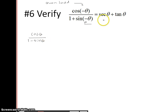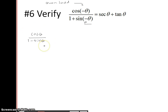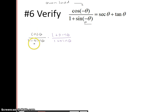I want this to equal secant of theta plus tangent of theta. So what we're going to need to do is use a new trick, which is called multiplying by the conjugate. We multiply by the conjugate when there's nothing left to do. The conjugate is the denominator but with the opposite sign. So I'm going to multiply it by 1 plus sine of theta over 1 plus sine of theta. We already have it written as sines and cosines, nothing could cancel, and we want to end up with secant and tangent.